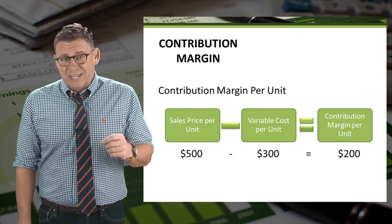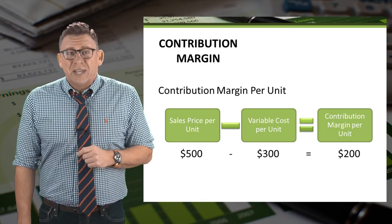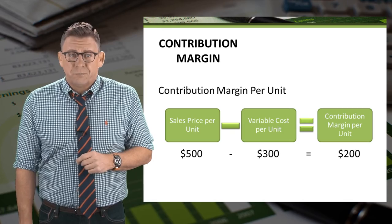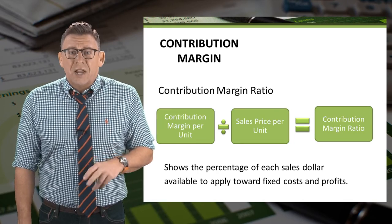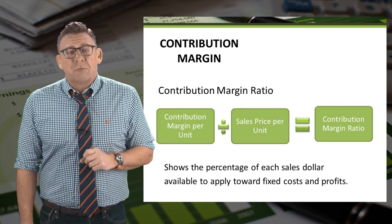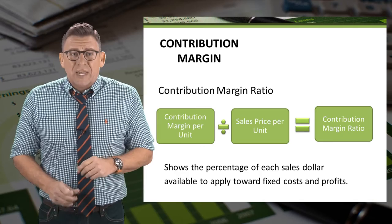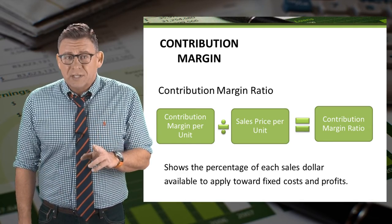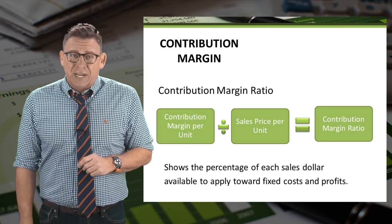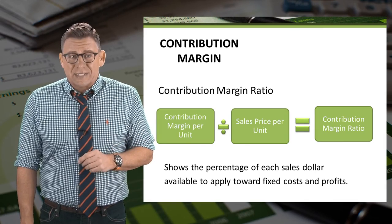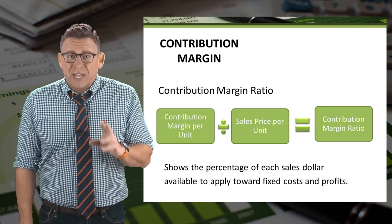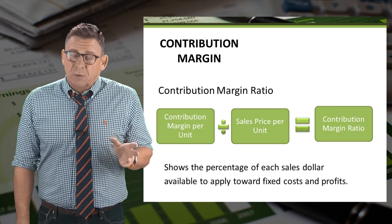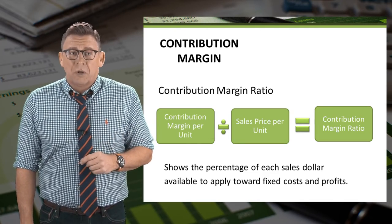When a company sells one more unit, it gets an additional $200 of contribution margin. Another important concept is the contribution margin ratio. It is calculated by taking contribution margin per unit and dividing it by the unit price. It is a percentage of each sales dollar that is available to cover fixed costs and normal profits.